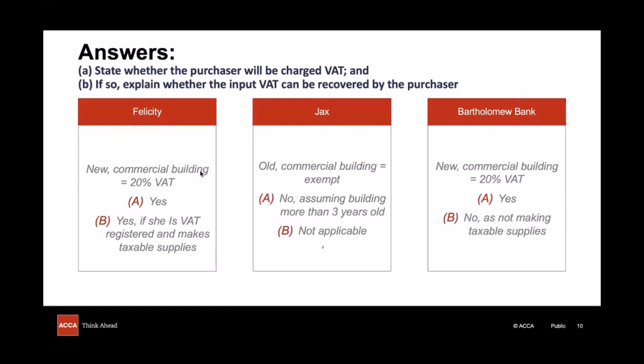Finally, what about the bank? This was a new building purchased to add to its existing network of branches, so it sounds like it would qualify for that exception to the rule and 20% VAT would have been charged on it. But we're told that banking is an exempt supply, and so the building is not being used in order to make taxable supplies, and so the input VAT suffered by the bank on its purchase cannot be reclaimed from HMRC. So that's the type of process you'll need to work through for such transactions in order to decide on their treatment.